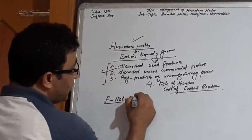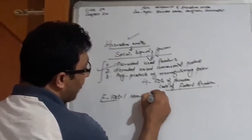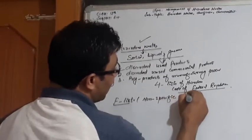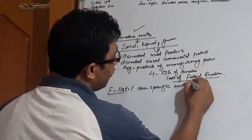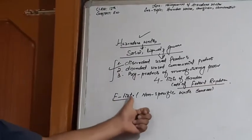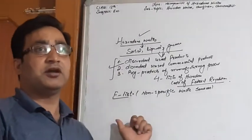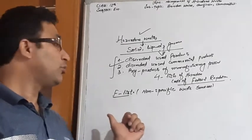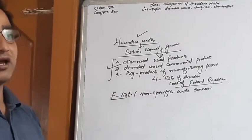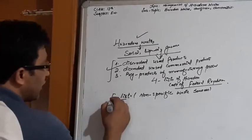F-listed hazardous waste or F-list actually possess the non-specific waste sources. That means they are not specific. They are not actually generated by a particular manufacturing industry. So, the second list is called K-list.